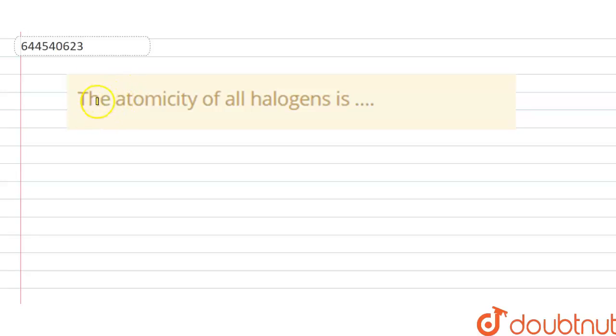Hello students, today our question is the atomicity of all halogen is. So the solution of this question is,